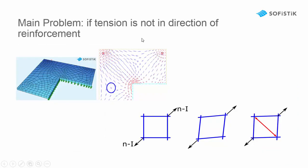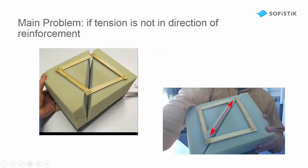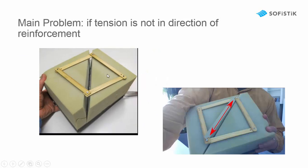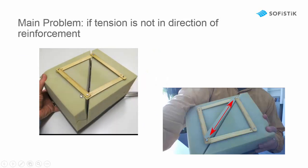The main problem in a finite element program is that the main tension direction is not in the direction of the reinforcement. And if we have tension under 45 degrees on the reinforcement mesh, it is distorted and needs a compression strut. We can show this very well on a simple model. Here the reinforcement cannot carry anything, only if we have this compression strut.